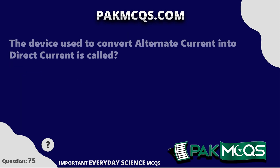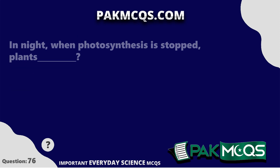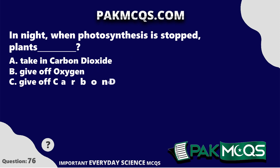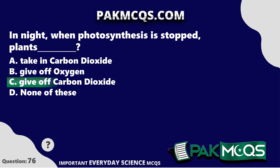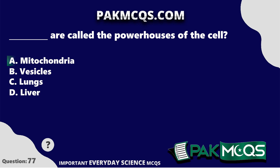The device used to convert alternating current into direct current is called a Rectifier. At night, when photosynthesis is stopped, plants give off carbon dioxide. Mitochondria are called the powerhouses of the cell.